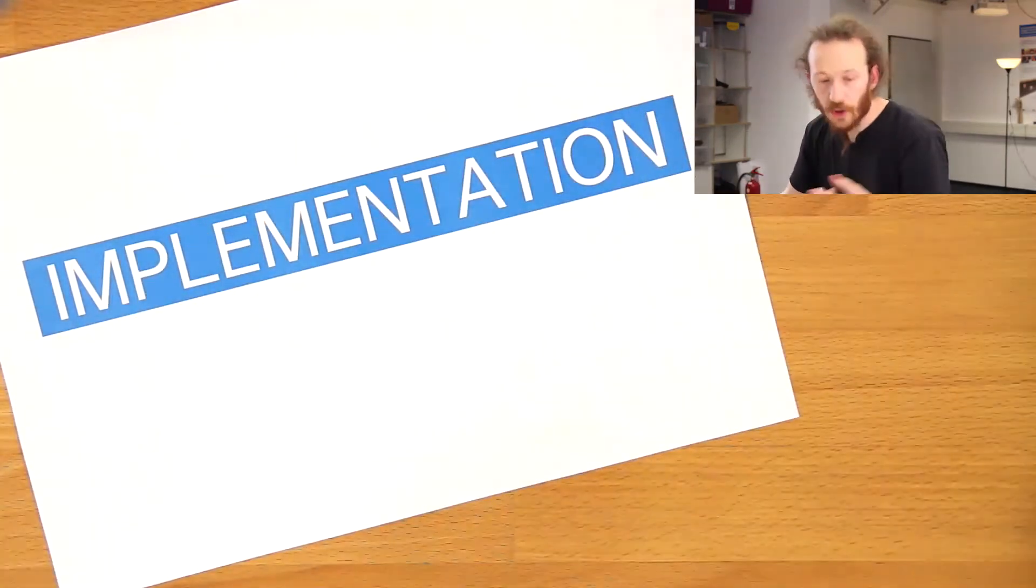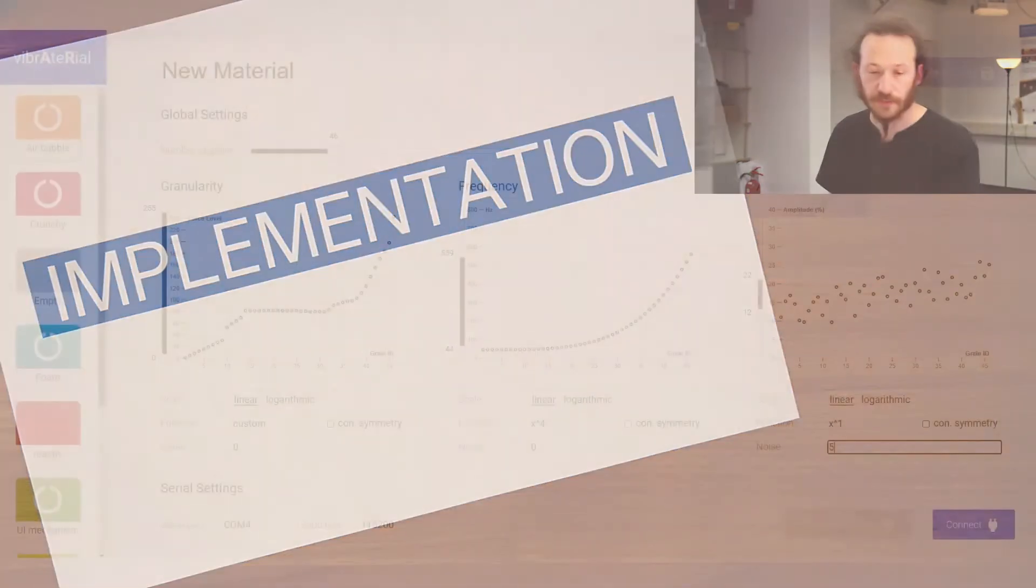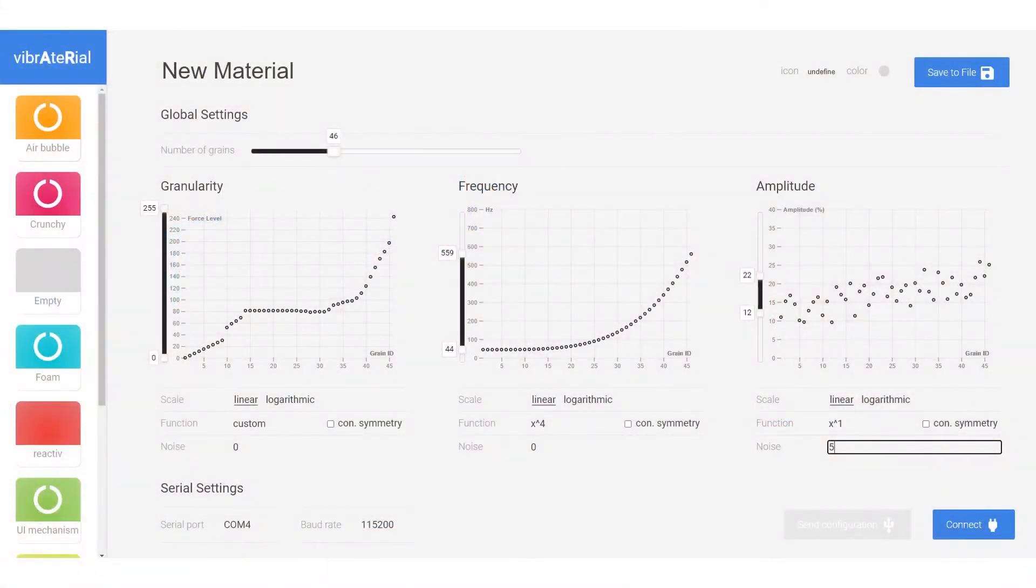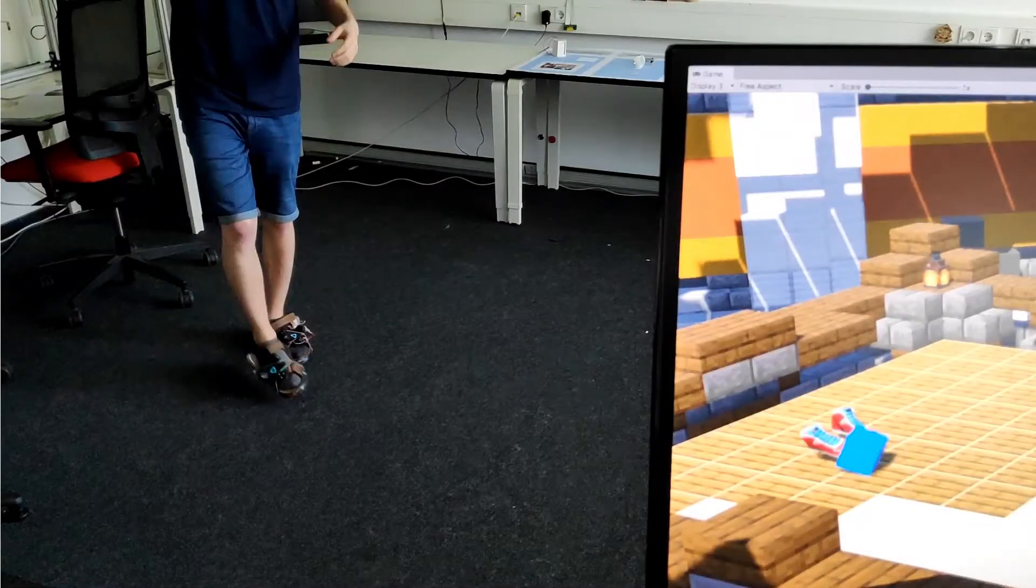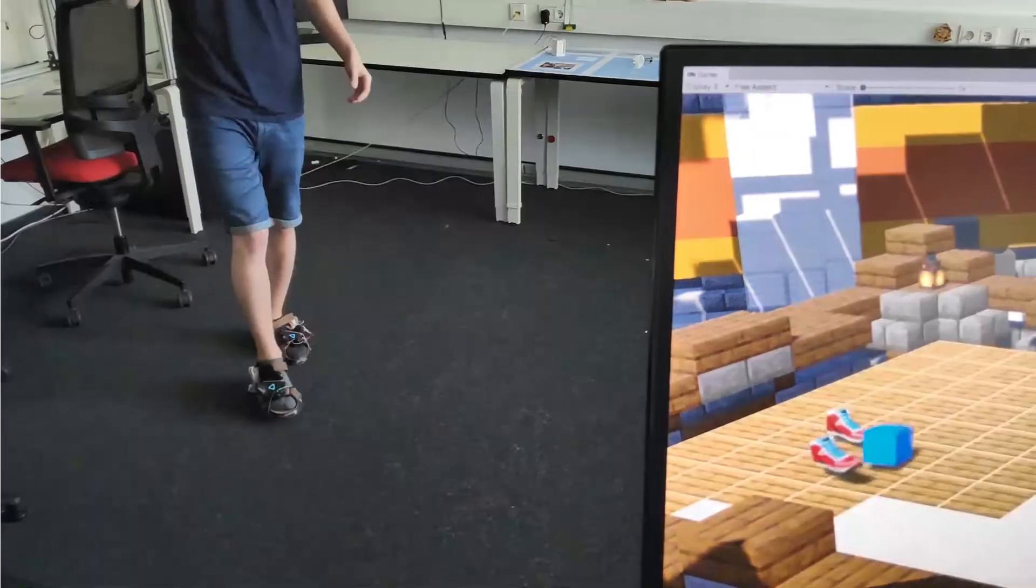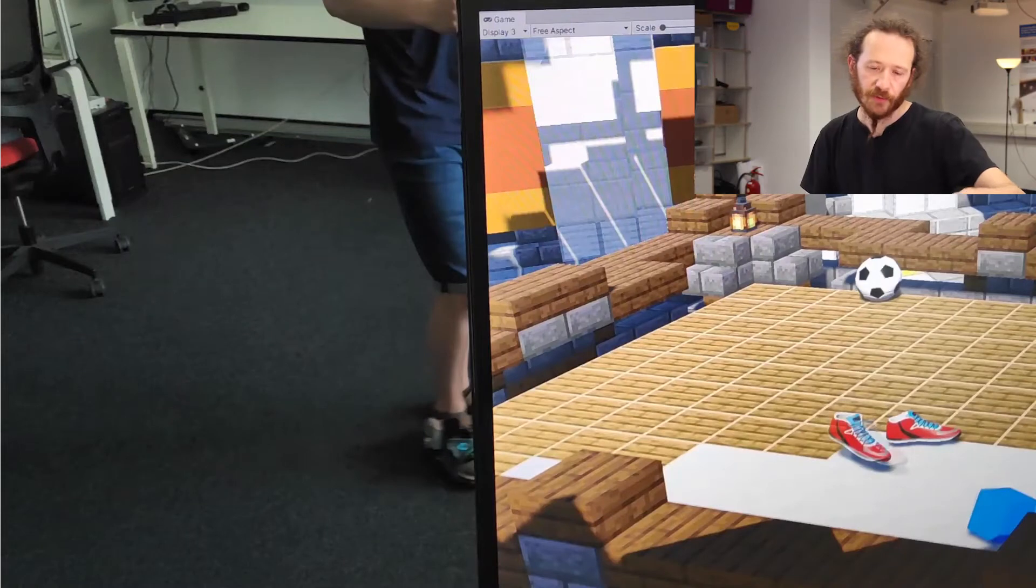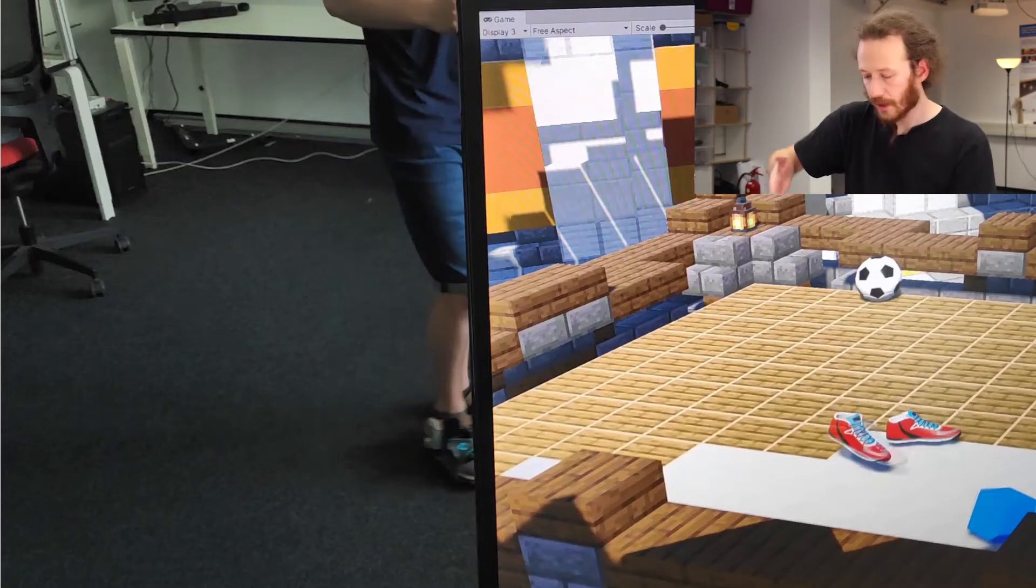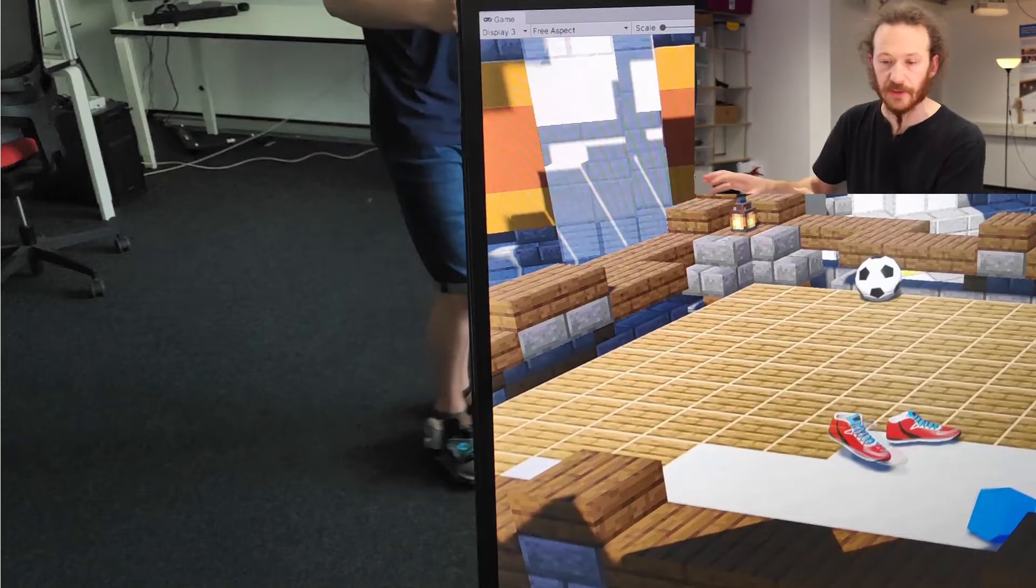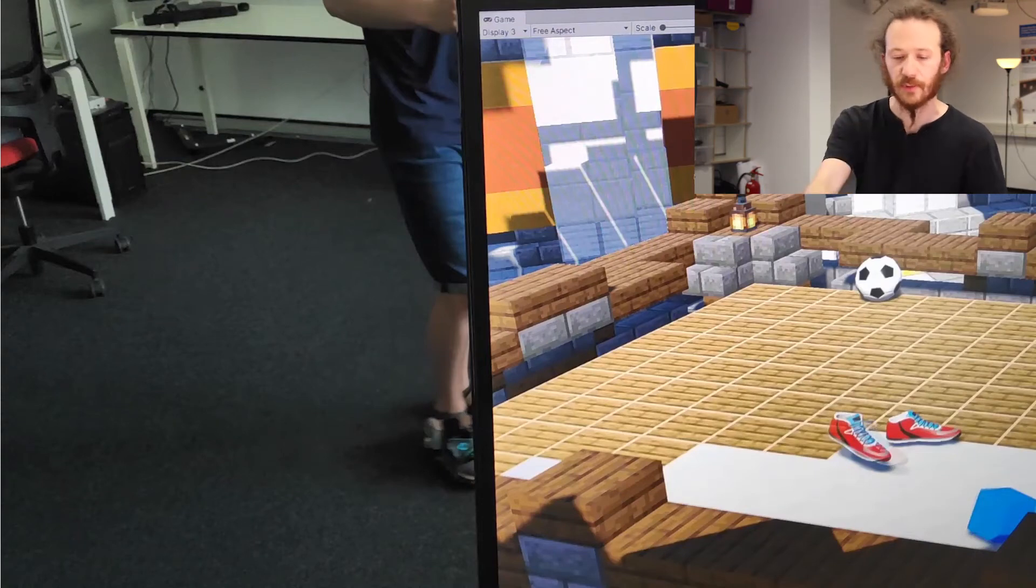And then we also created an application for quickly prototyping textures that you can experience with your feet and sending them from a Unity application to a shoe. So in this example, Dennis here, he's walking on a virtual texture and as he's stepping from the wood texture to the snow texture, Unity sends one of these textures to the shoe and the shoe switches. And when he steps on it, he feels the new texture. The texture rendering happens entirely in the shoe. All that Unity or the software you saw before is doing is it sends a new texture to the shoe.